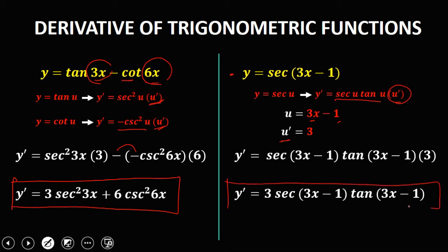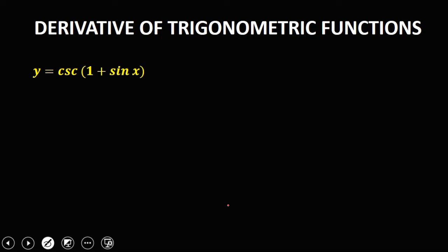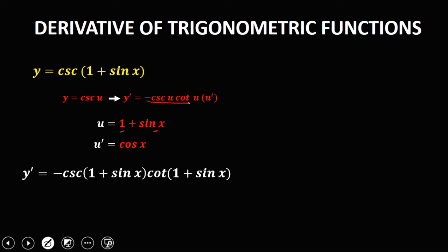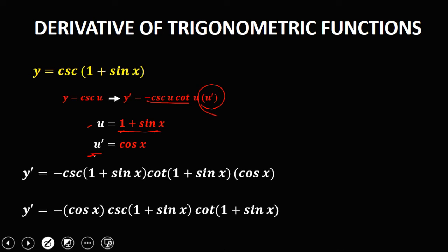For this given, since the derivative of cosecant is negative cosecant u times cotangent u times the derivative of u, u equals 1 plus sin x. The derivative of 1 is 0 and the derivative of sin x is cosine x. So y prime equals negative cosecant(1 plus sin x) times cotangent(1 plus sin x) times cosine x. Therefore y prime is equal to negative cosine x times cosecant(1 plus sin x) times cotangent(1 plus sin x).